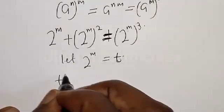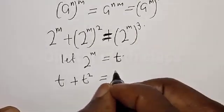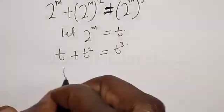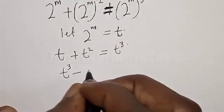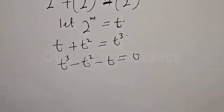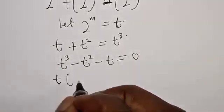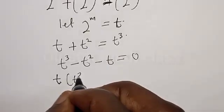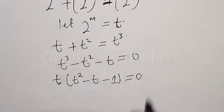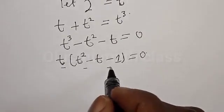Therefore we have t plus t squared is equal to t cubed. Now let's equate everything to zero: t cubed minus t squared minus t is equal to zero. Let's factorize this: we have t times t squared minus t minus 1 is equal to zero.